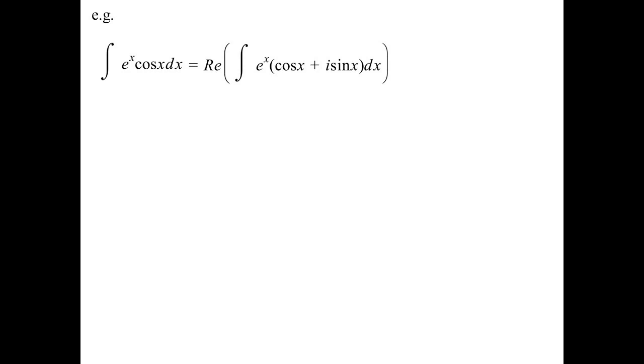But that is e to the x times e to the ix. I just want the real part of this expression. And then I just use index laws. And it's just a simple integral to do. 1 plus i is just a number. So I can integrate that. And I get one over 1 plus i, e to the 1 plus i x. But just the real part of that I want.